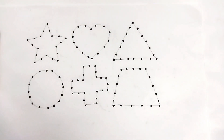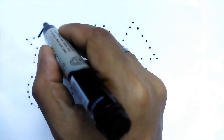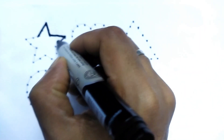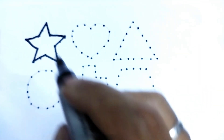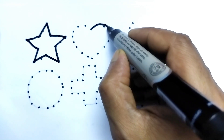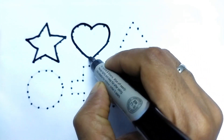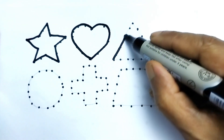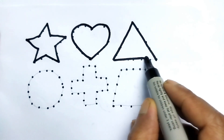Hello kids, how are you today? We will learn different types of shapes and different types of colors. This is a star — this is our favorite heart shape. This is a triangle.